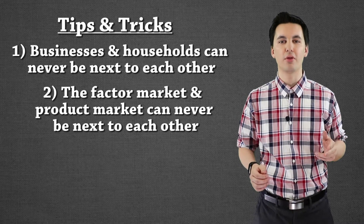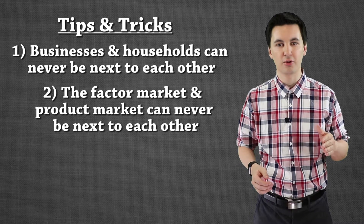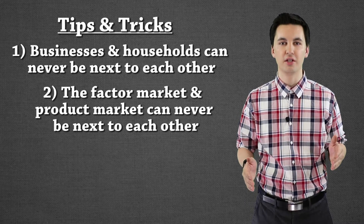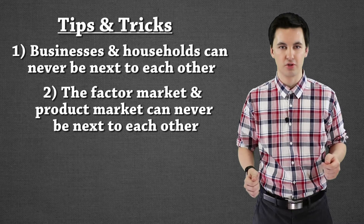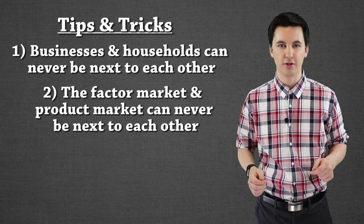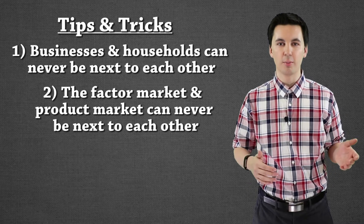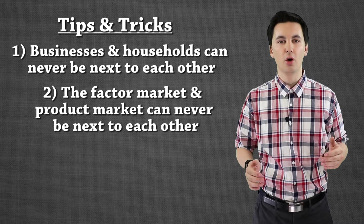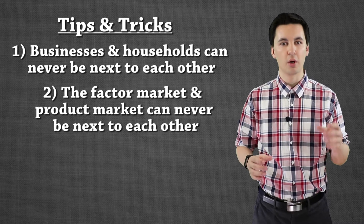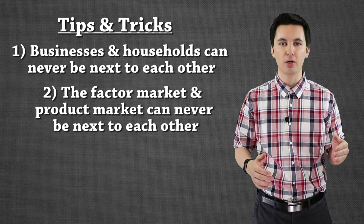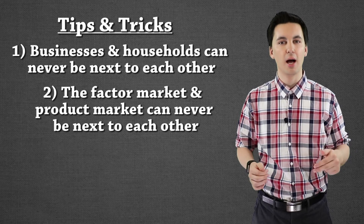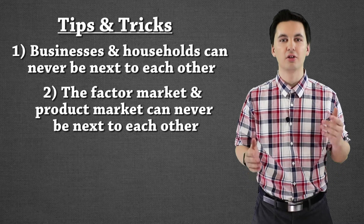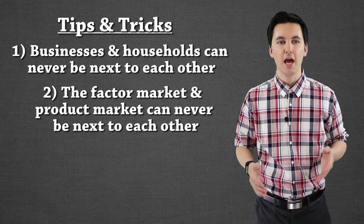Tip number two is to remember that our factor market and product market always need to be across from each other — they can never be next to each other. Just like businesses and households, if we know that one area of the model is the factor market, whatever is opposite of that is going to be our product market.